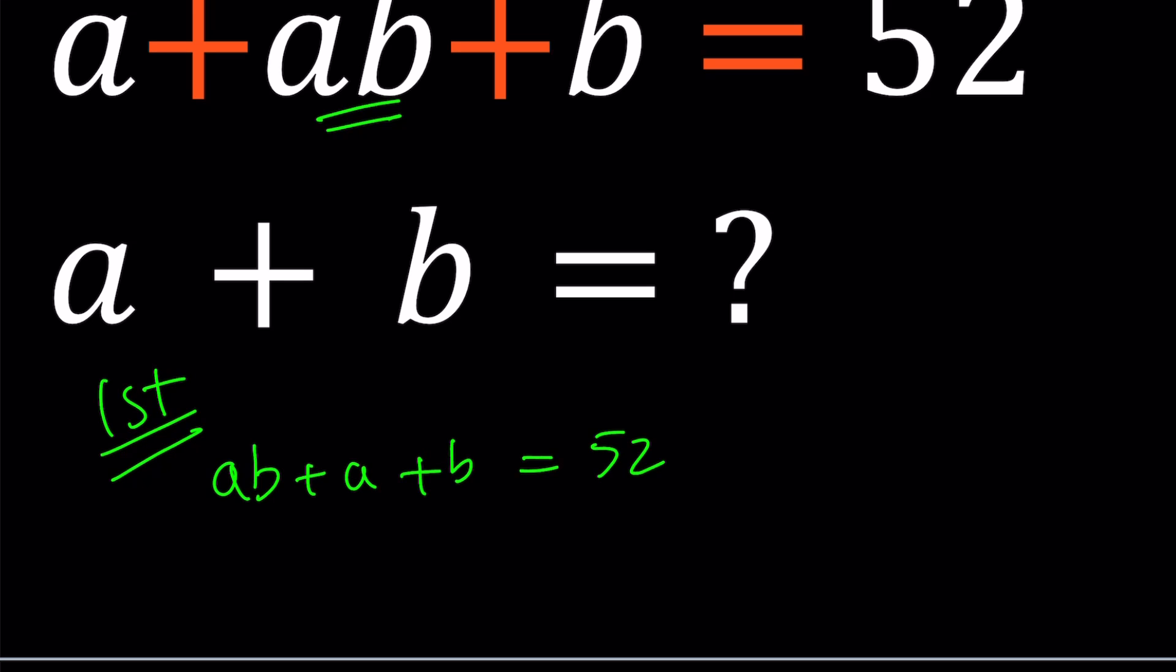Even though we don't have a common factor, we can still factor the first two terms. Because a is a common factor, that gives us b plus 1. And then, obviously, this b plus 1 needs to be followed by another b plus 1, so we'll end up having a common factor. That's how Simon works. So we're going to add 1 to both sides, and that's going to give us 53.